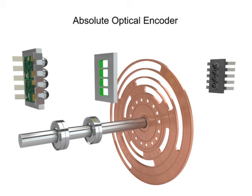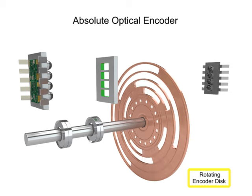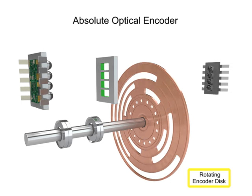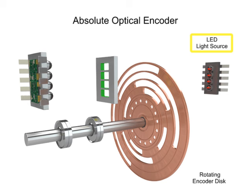The most common type of feedback device is the absolute optical encoder. An absolute encoder consists of four major components: a rotating encoder disk, a light source such as an LED, a photo detector as the light sensor, and a signal conditioner that converts the signals into square waveform.